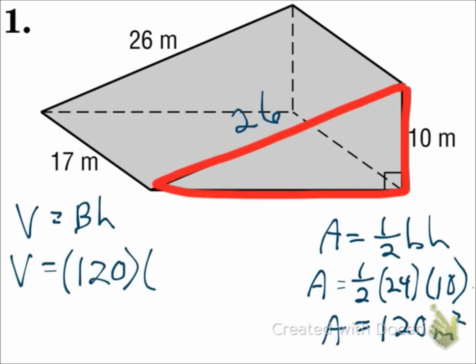The height of the prism is the distance between the bases, and that will be 17. So the total volume is 2040 meters cubed.